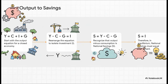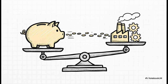Stay with me, because this is where a little bit of high school algebra reveals something amazing. If we take our main equation and just shuffle it around a bit, we can isolate investment, or I, on one side. What's left on the other? It's the total output of the economy minus what households consumed and what the government spent. And what do you call the money that's produced but not spent? You call it savings — specifically, national savings, or S. And there it is, the big reveal: all the money saved by everyone in the economy — that's you, me, and the government, all combined — is the exact same pool of money available for businesses to invest. They have to be equal. One literally cannot exist without the other. It's a perfect balance.